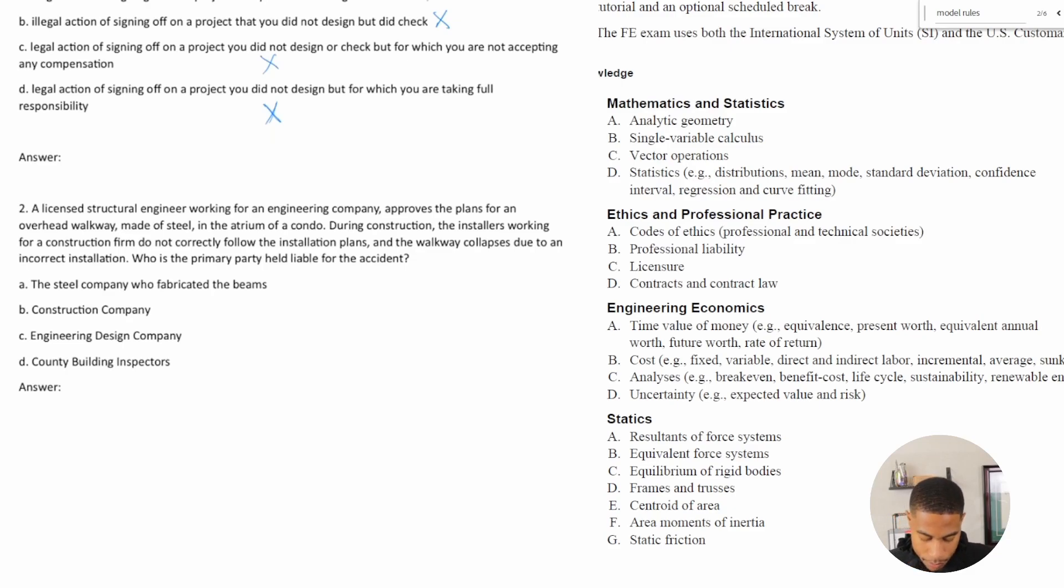So number two says: a licensed structural engineer working for an engineering company approves the plans for an overhead walkway made of steel in the atrium of a condo. During construction, the installers working for a construction firm did not correctly follow the installation plans, and the walkway collapses due to an incorrect installation. Who was the primary party held liable for the accident?